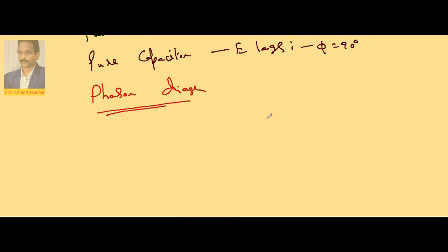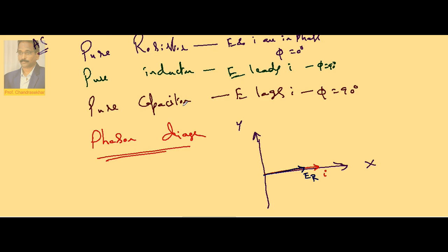Since I is constant throughout the series circuit, we take I along the x-axis. For the resistor, E_R is in phase with I, so it lies along the positive x-axis. For the pure inductor, E leads I by 90°, so E_L is along the positive y-axis.